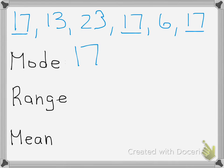Range is the difference between the biggest and the smallest numbers. In this set, 23 minus 6 equals 17. So the range is also 17.